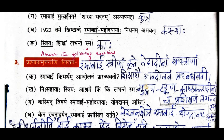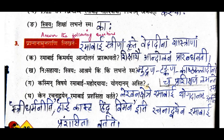Now let us move on to third question: prashnana muttara ani likhata — answer the following questions. First: ramabhai kimartham andolanam prarabdhavati — for what reason did Ramabhai start a movement? She started the movement so that ladies could also learn the Vedas. Answer: ramabhai strinam krite vedadhinam shastranam sikshayay aandolanam prarabdhavati. Second question: nissahayaha striyaha ashrame kimkim labhantesma — what did the helpless women obtain in the ashram?